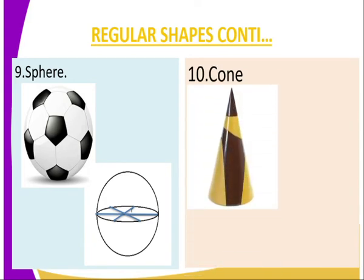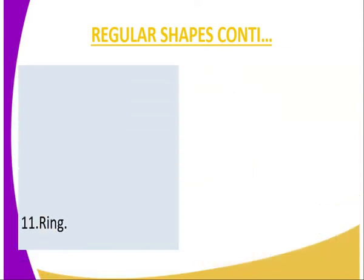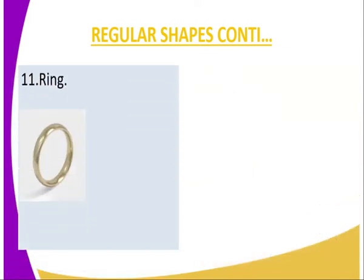For a cone, you find the center of gravity by constructing the perpendicular bisector from the base. The point of intersection, which is one third of the axis from the base, gives the center of gravity of the cone.